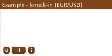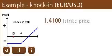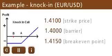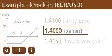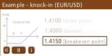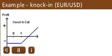For example, imagine you buy a knock-in call option on the EURUSD with a strike price of 1.41, a barrier of 1.4, and a break-even point of 1.415. If the EURUSD pair drops down to the barrier at 1.4, knocks you into the vanilla call option, and then turns around and moves back up above the break-even point at 1.415, you will be profitable on your knock-in call option trade.